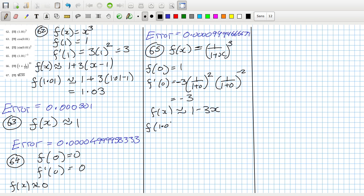So f of 1.01 would be approximately 1 minus 0.03, 0.97.